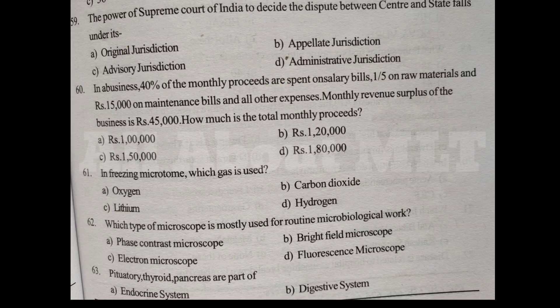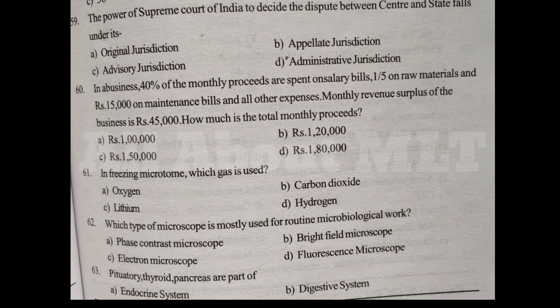In a freezing microtome, which gas is used? Option A Oxygen, Option B Carbon dioxide, Option C Lithium, Option D Hydrogen. Answer is Option B Carbon dioxide.